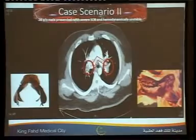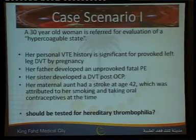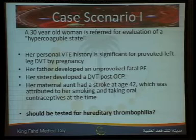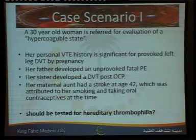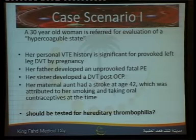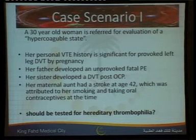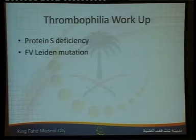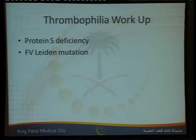The first clinical case: a 30-year-old female referred for evaluation of hypercoagulable state. Her personal VTE history is significant for provoked left leg DVT by pregnancy. Her father developed an unprovoked fatal PE. Her sister developed DVT post-OCP, and her maternal aunt had a stroke at age 42, attributed to smoking and oral contraceptives. She should be tested for thrombophilia — and testing confirmed combined thrombophilia: protein S deficiency and antiphospholipid antibody. She was maintained on long-term anticoagulation.